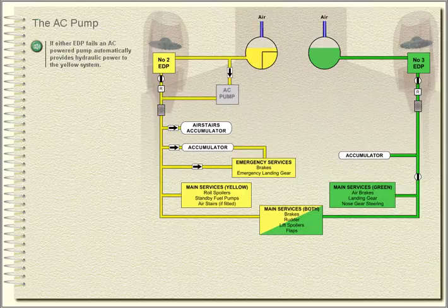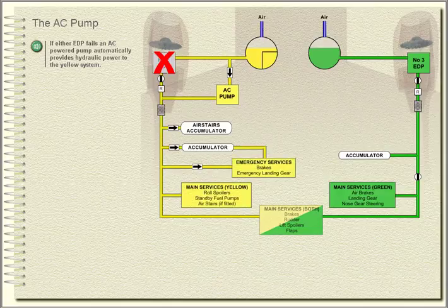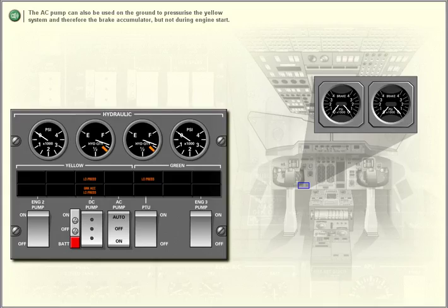If either EDP fails, an AC-powered pump automatically provides hydraulic power to the yellow system. The AC pump can also be used on the ground to pressurize the yellow system and therefore the brake accumulator, but not during engine start.